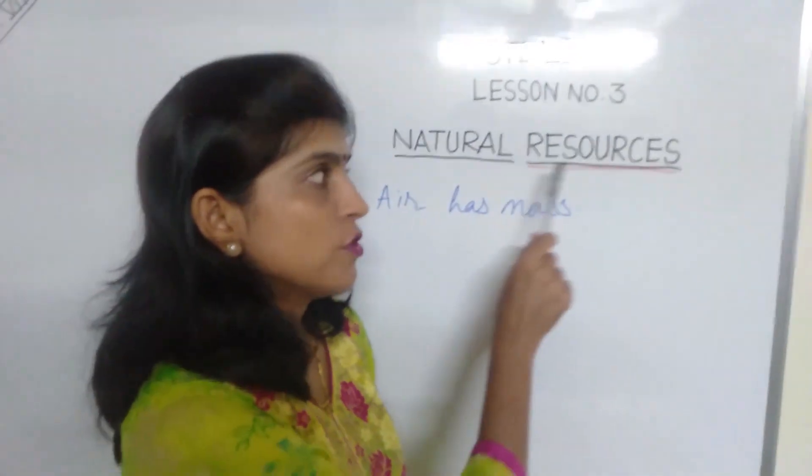Children, do you know what resources are? Resources are all the sources which satisfy the needs of not only human beings but also other living things. For example, a need for food is satisfied by plants, so plants are a resource. We need oxygen for respiration — so what is the source of oxygen? Obviously, air.